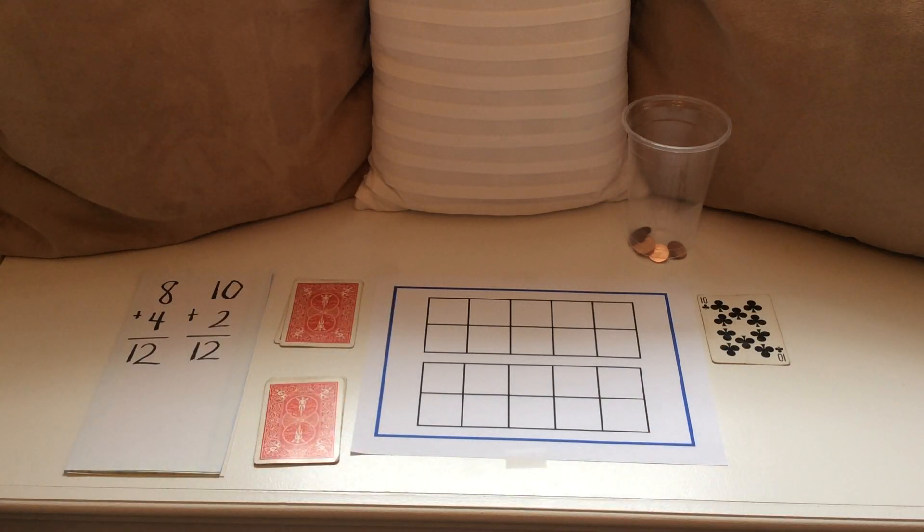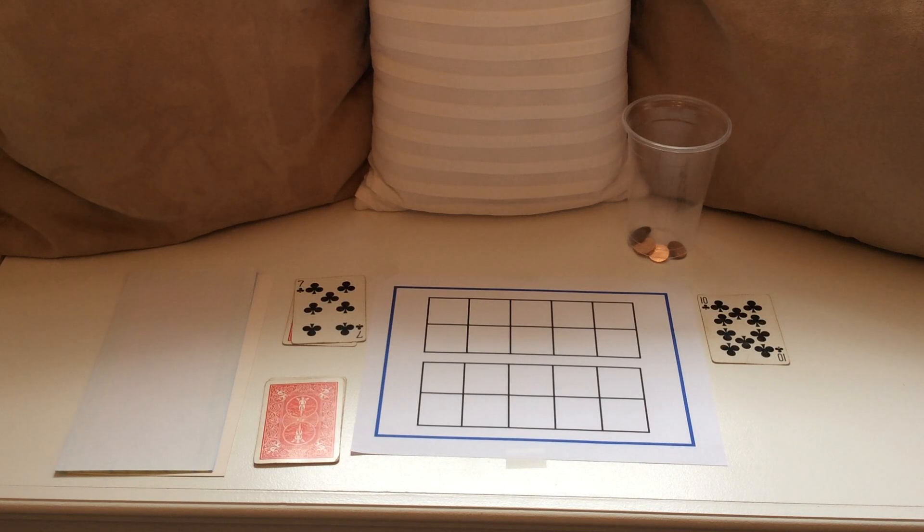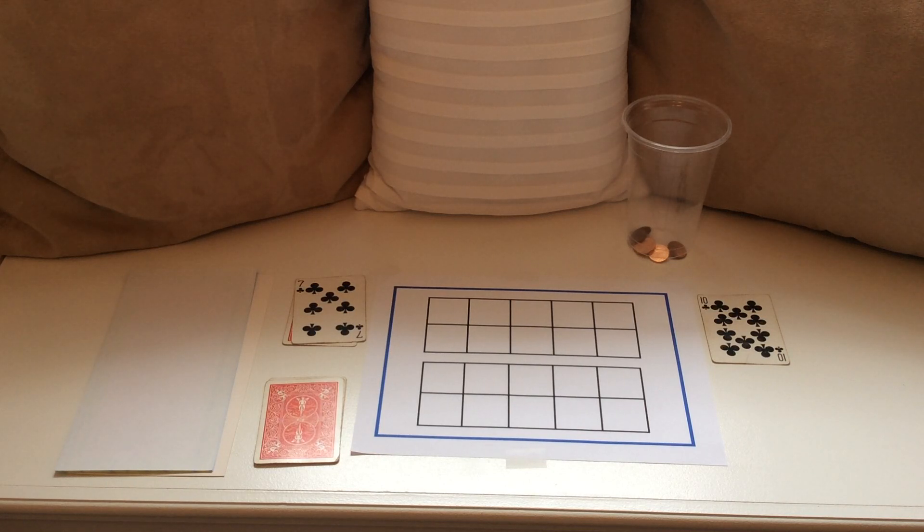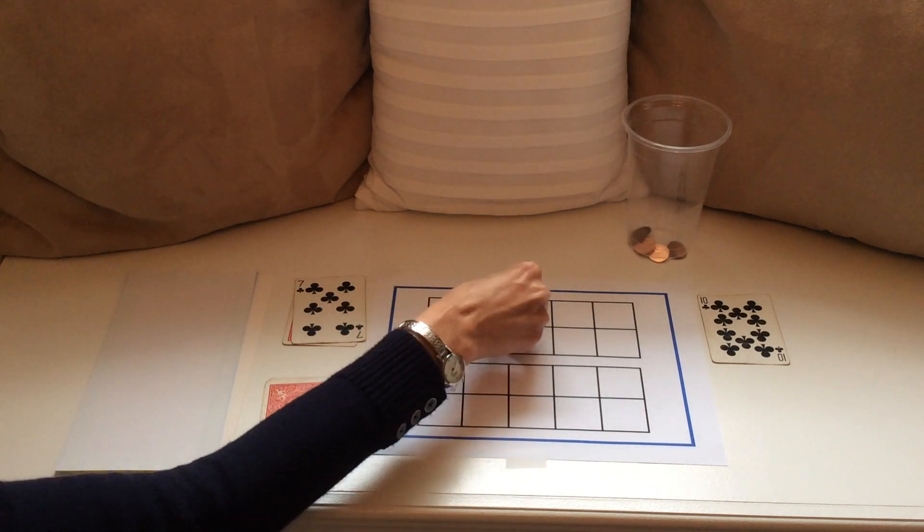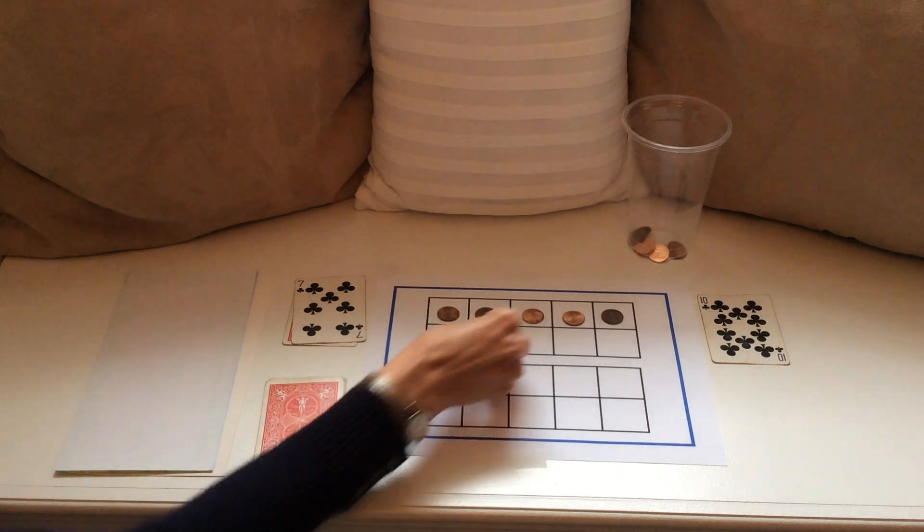I have my vertical addition sentence set up and ready to go. Our first addend is 7. I'll represent it on the 10 frame with 7 counters. 1, 2, 3, 4, 5, 6, 7.